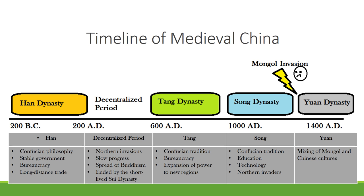Let's start by looking at a timeline. Last time we talked about the Han Dynasty — a really important and powerful dynasty that lasted about 400 years. They were founded on Confucian ideas, had a stable system of government based on bureaucracy, and developed long-distance trade, especially the Silk Road. But after the Han fell apart, there was a long period of decentralization where smaller powers competed and nobody could really unite China.